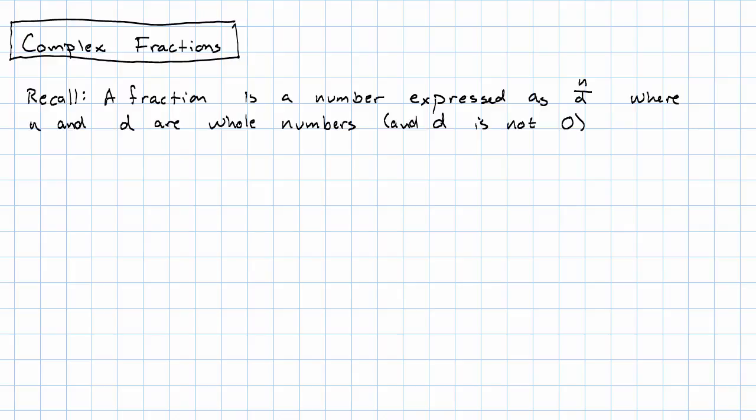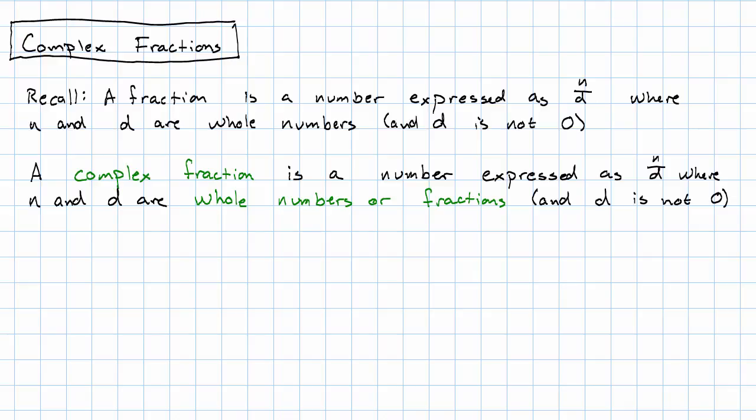What if we allow fractions to be written in those places? A complex fraction is a number expressed in the form n over d, where n and d themselves might be fractions. For example, we might have 5 sevenths over 9 thirteenths. That would be a complex fraction.